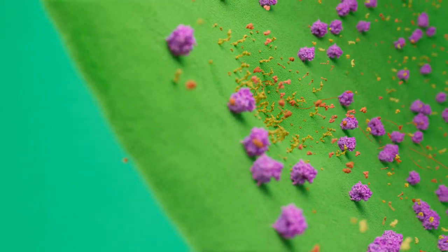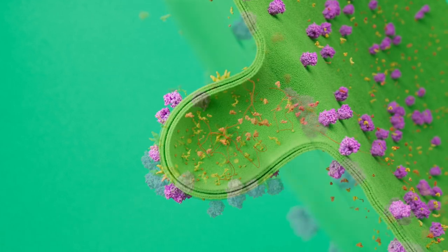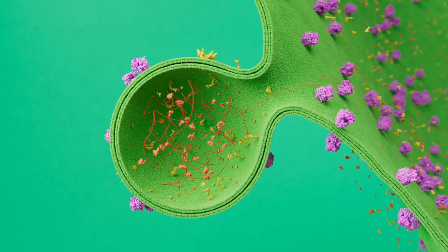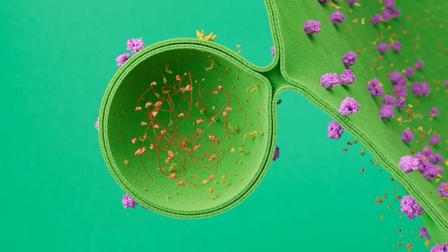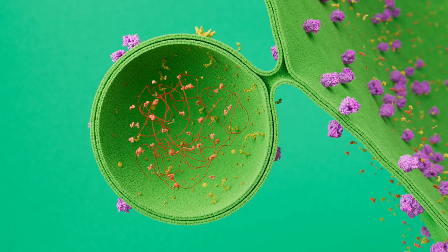The three NSPs that are embedded into the endoplasmic reticulum membrane cause it to curve. This disrupts the sheet-like shape of the ER and creates a structure called the double-membrane vesicle, or DMV. These DMVs create a safe, enclosed environment for the viral genome to be copied.